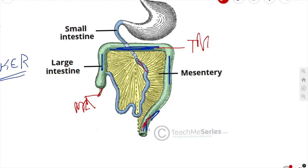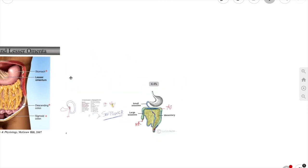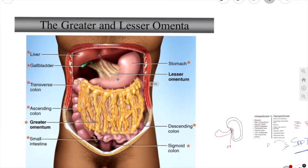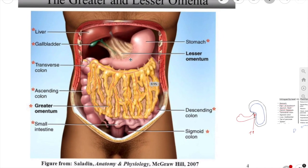Now let's talk about the omentum. The omenta are sheets of visceral peritoneum that extend from your stomach and proximal part of the duodenum to other abdominal structures. We have two types of omentum: the lesser omentum and the greater omentum. They are simply peritoneal folds.